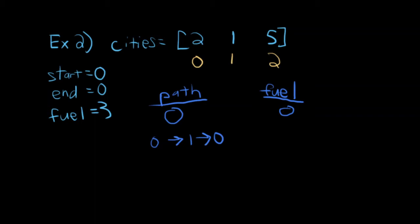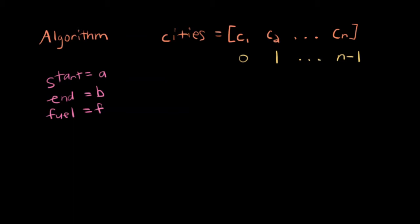Another way I can do this is going from 0 to 1 to 0. And how much fuel does that use? Going from 0 to 1 uses 1 unit of fuel, and going from 1 to 0 uses another unit of fuel for 2 units of fuel. Notice how I didn't use all my fuel. I still have one left over. And that's okay, because I was able to get from where I had to start to where I needed to go using less than the amount of fuel I needed to. I don't need to use all my fuel. I just can't use more than I'm given.